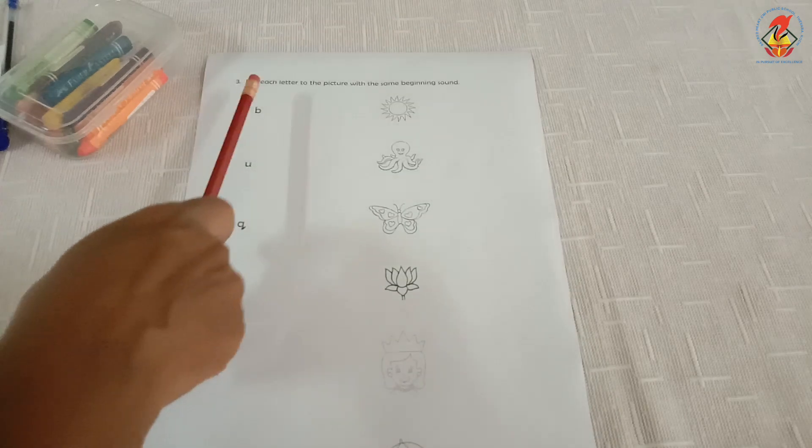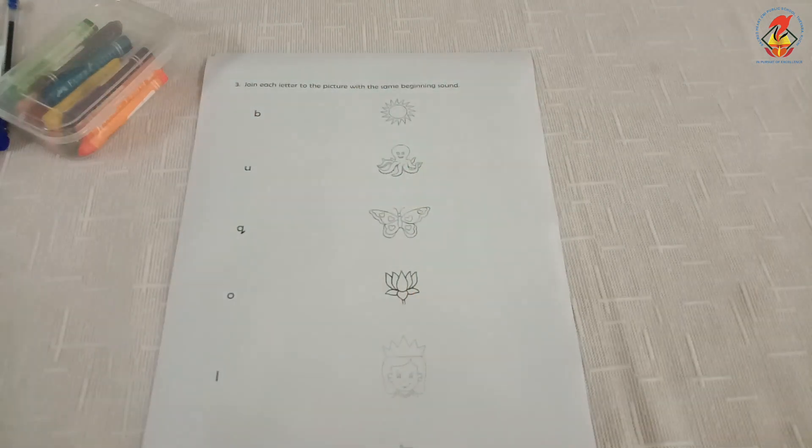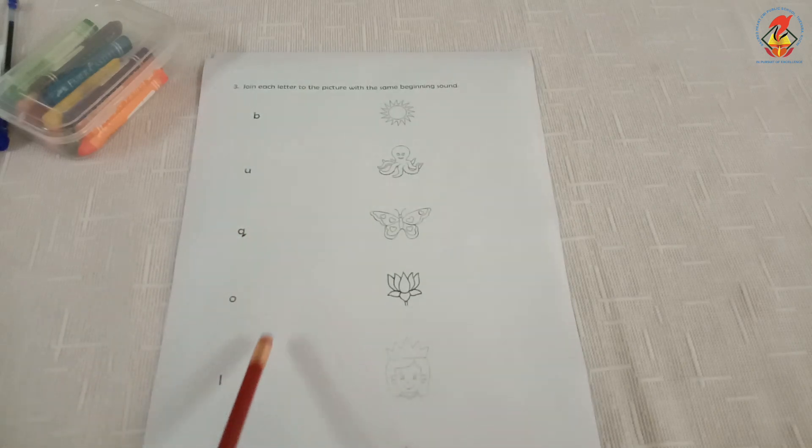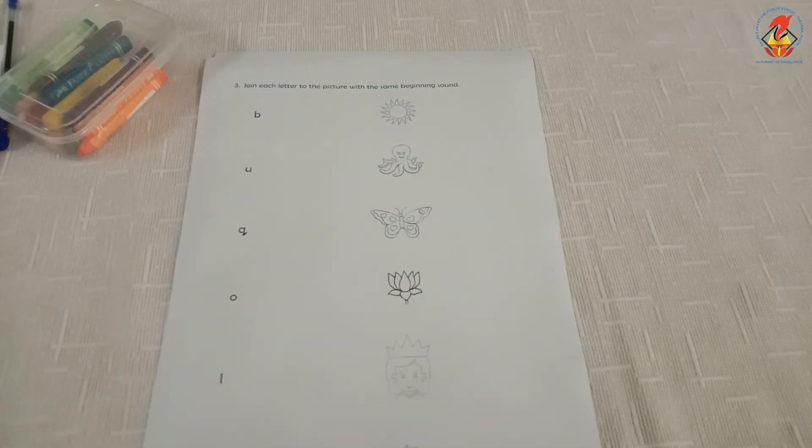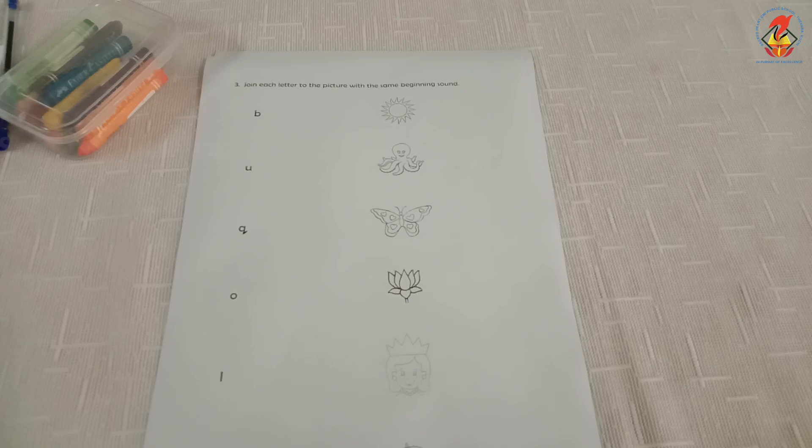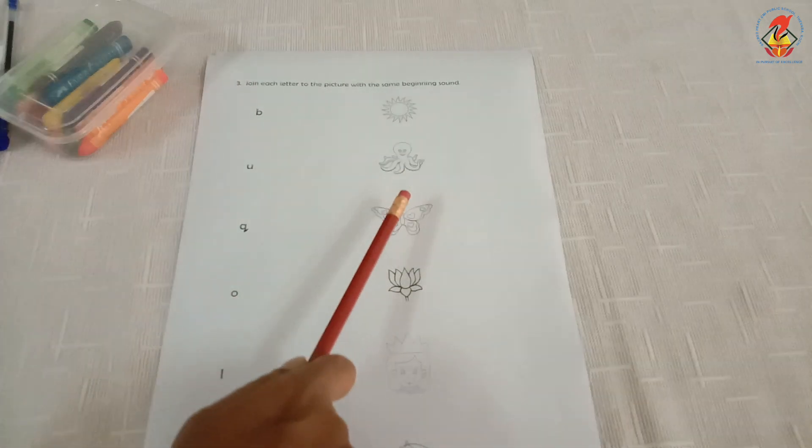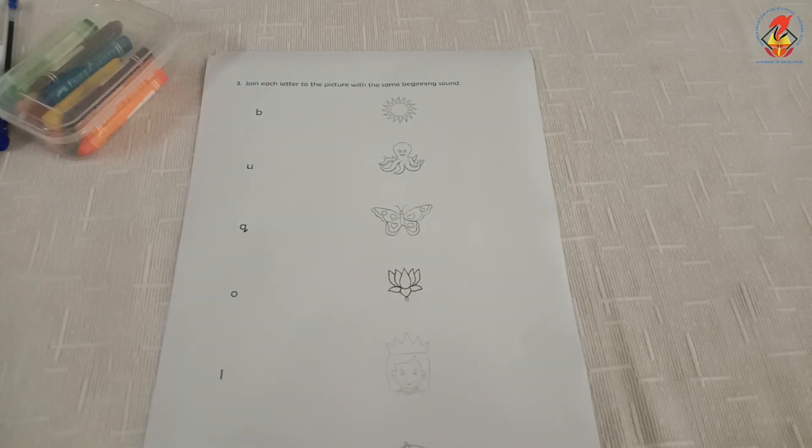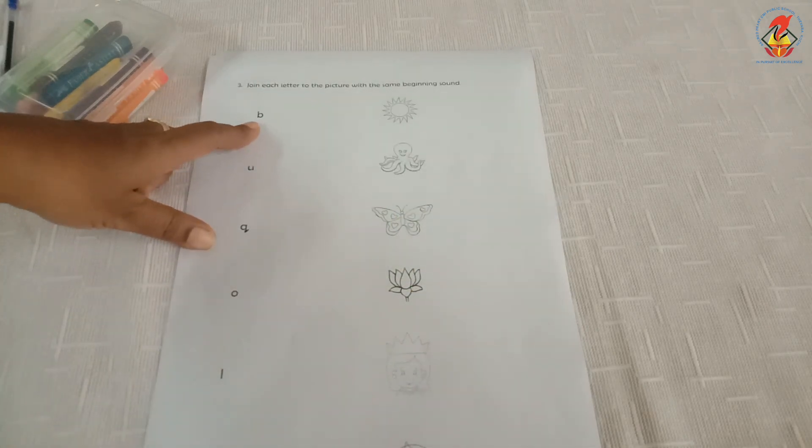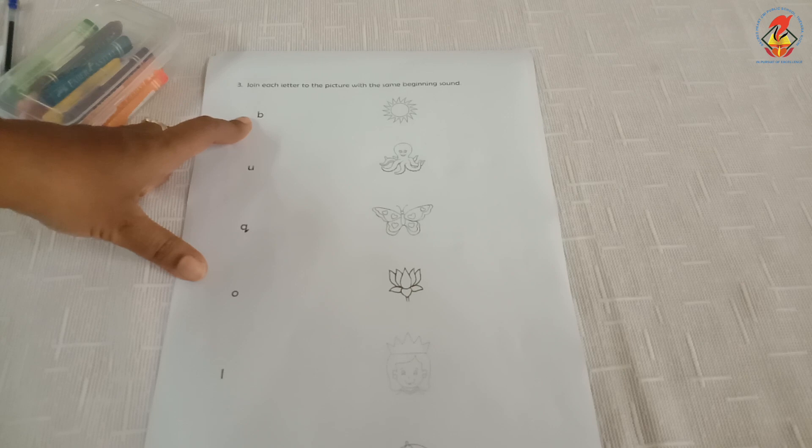Next question, join each letter to the picture with its same beginning sound. Children, here on one side you have few letters and on the other side you have pictures. What you have to do is identify the letter, then match to the picture that begins with the same sound. Now, for example, which letter is this? This is letter B. Letter B sounds B.